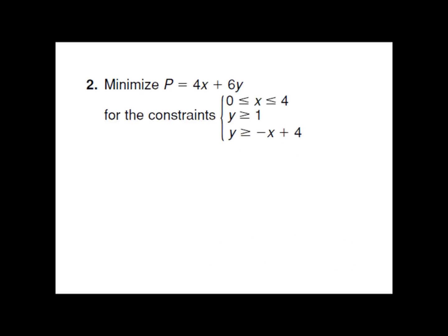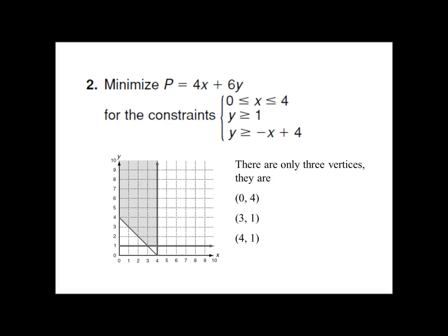Now we want to minimize — we're looking for the smallest number. Our constraints look a little bit different. Sometimes they do. Our first one is really two equations in one: 0 is less than x is less than 4, meaning our x values have to be between 0 and 4. So that's two vertical lines, one at 0 and one at 4. Y has to be greater than or equal to 1 — that's a horizontal line and we have to be above it. Y is greater than negative x plus 4 — find the y-intercept of 4, use a slope of negative 1, and this is our region.